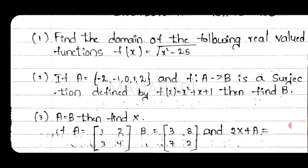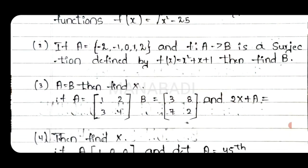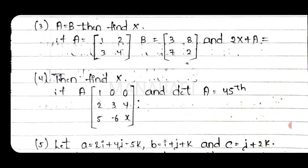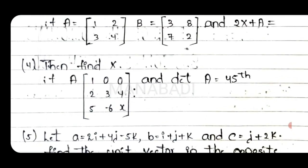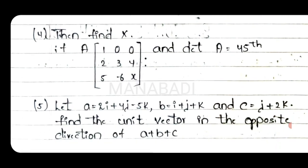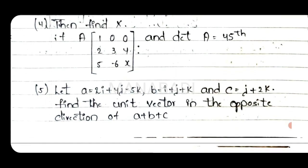This is the second question. Third question. That is the fourth question — that is a matrix. This is the third question. This is the fourth question. Fifth question: we have to do vectors — the two A, B and C equations. Find the unit vector in the opposite direction of A plus B plus C. This is the fifth question.